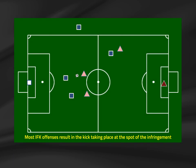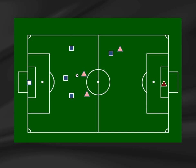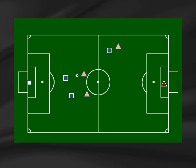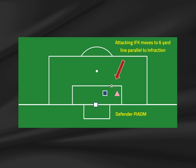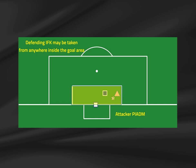If an indirect free kick offense is committed on the field by a player, the site will be at the site of the infraction. Exceptions include: if a substitute enters the field without permission, the indirect free kick is granted where the ball was when play was stopped; if a player's momentum carries them off the field and they commit an infraction, the restart is on the nearest boundary line. Indirect free kicks cannot be taken inside the attacking goal area — they should be moved parallel to that spot on the six-yard line. If the defending team is given an indirect free kick inside its own goal area, the ball may be placed anywhere within the goal area, like a goal kick.